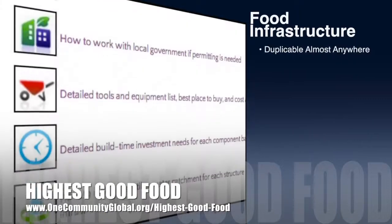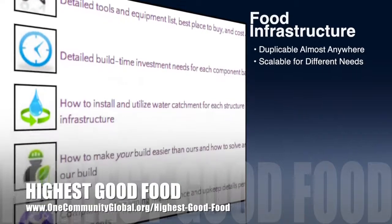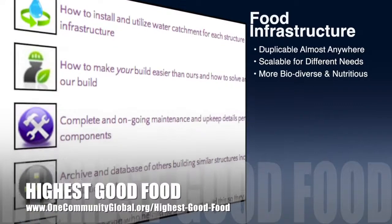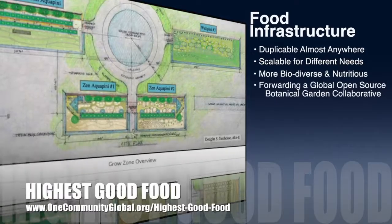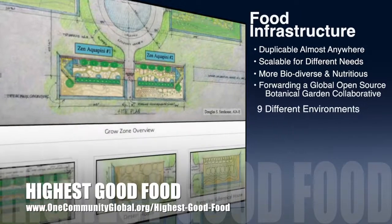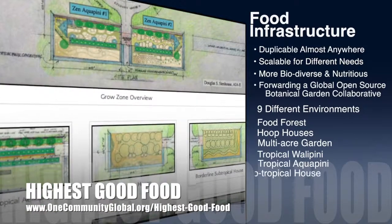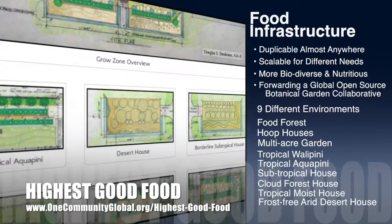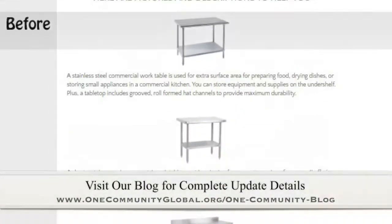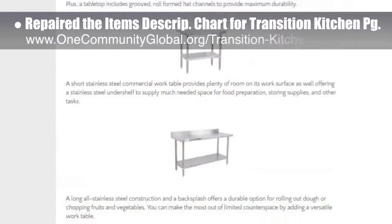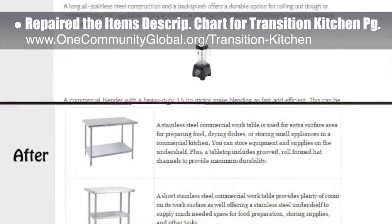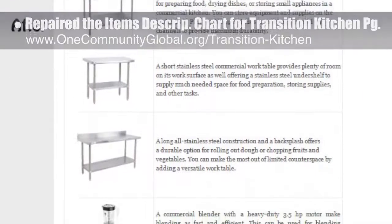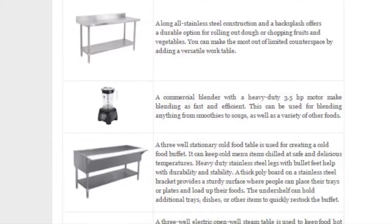OneCommunity's approach to highest good food is duplicable almost anywhere, scalable for different needs, more biodiverse and nutritious, part of forwarding a global open source botanical garden collaborative, and includes 9 different free shared and duplicable growing environments. This week, the Core team repaired the item description chart on our Transition Kitchen page and finished resizing the remaining 50% of the images on it. You can see that work here.